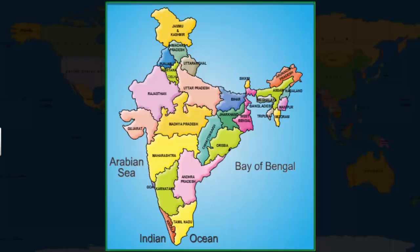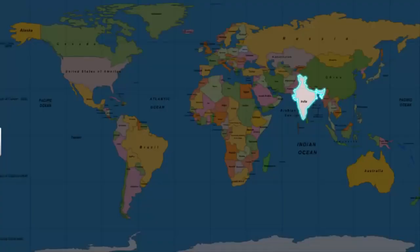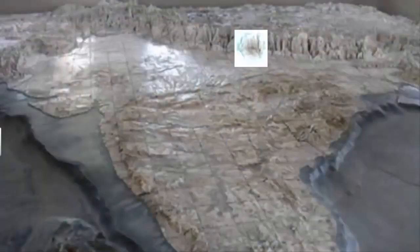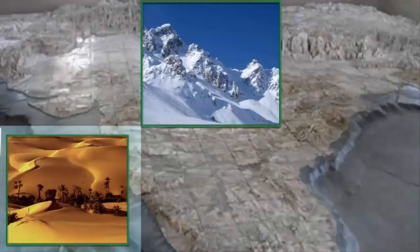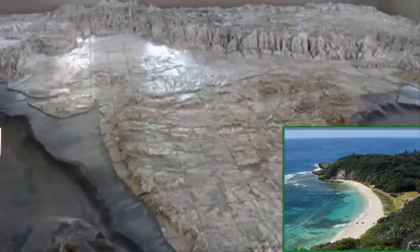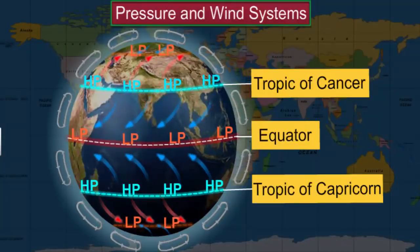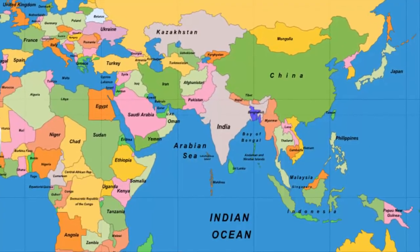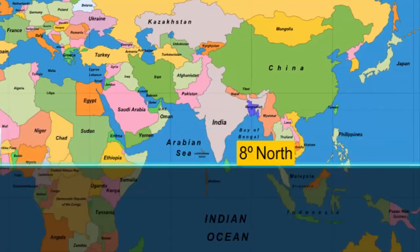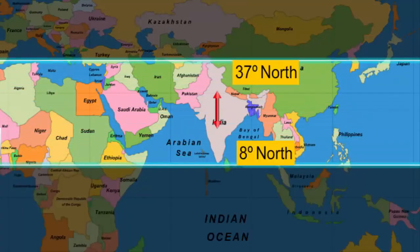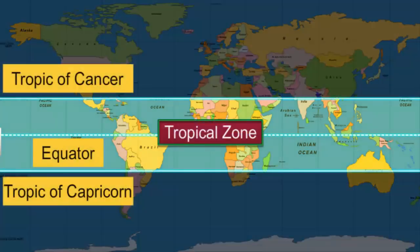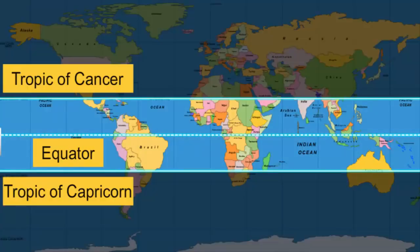India's climate is determined mainly by its location, altitude, relief features, and the pressure and wind systems. India is situated approximately between 8 degrees north and 37 degrees north latitude. It falls under the tropical region, which is the belt between the two tropics. Predominantly, the climate of places located in the tropical region is hot and humid.